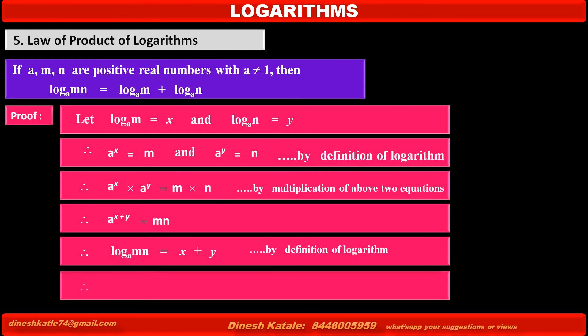Therefore, by substituting the values of X and Y according to our assumption, we get log of product M times N to the base A is equal to the value of X, which is log of M to the base A, plus the value of Y, which is log of N to the base A.